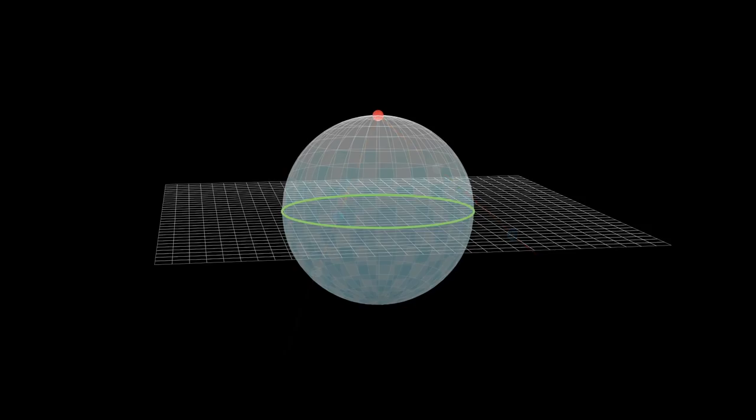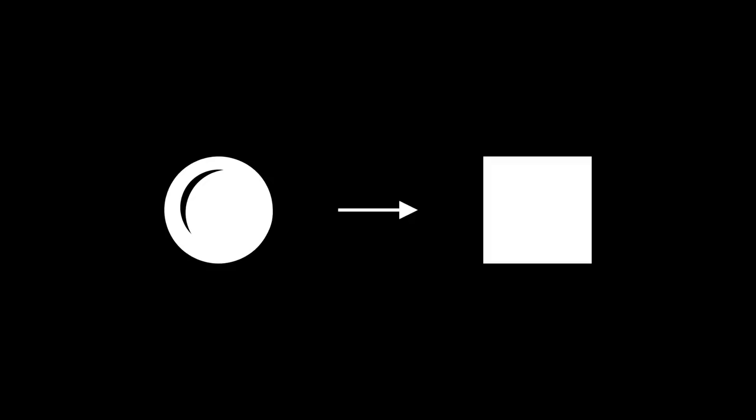It turns out that the stereographic projection has both of the important properties we need. It's a one-to-one mapping, and circles on the plane correspond to circles on the sphere. Proving this is not simple, but the good thing about mathematics is that it's collaborative, and we can outsource proving the circle-preserving property to other people. I've linked a few proofs in the description if you're interested.